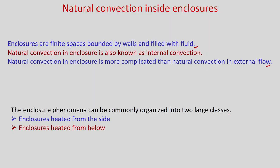The enclosure phenomena can be commonly organized into two large classes: enclosures heated from the side and enclosures heated from below. If you have an enclosure where top and bottom walls are adiabatic and side walls are heated — one at hot temperature and the other at cold temperature — then this is heated from the side. Another problem is where the enclosure is heated from below, where the bottom wall is maintained at higher temperature than the top wall and side walls may be insulated.